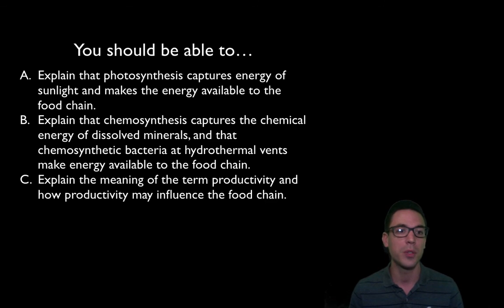So at this point these are the three things you should be able to do. Hopefully you're able to explain that photosynthesis captures energy of the sun and makes that energy available to the food chain, really understand how. You should be able to explain that chemosynthesis is another process that's going to capture chemical energy like hydrogen sulfide and they're going to use that energy to make it available to the rest of the food chain. And then finally explain the meaning of the term productivity, this idea about the rate at which we capture energy or take that carbon and how that may influence the rest of the food chain. The more productive, the more biomass and energy available to everyone else. If you can do that, you're in great shape and as always, if not, feel free to go back and re-watch any section. Thanks for watching.